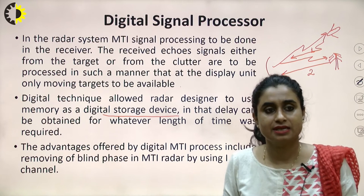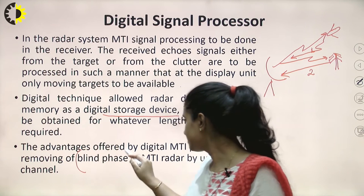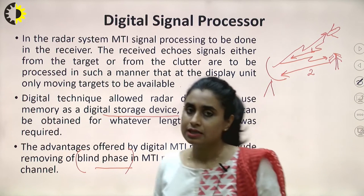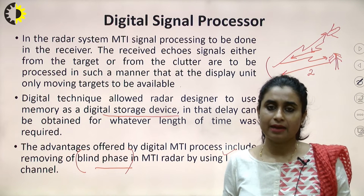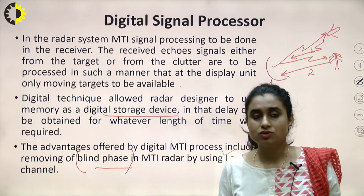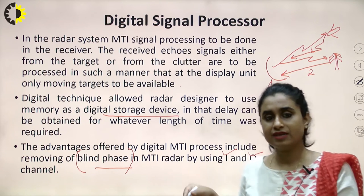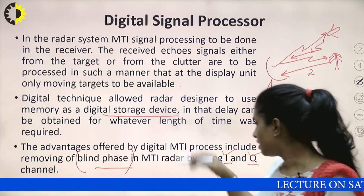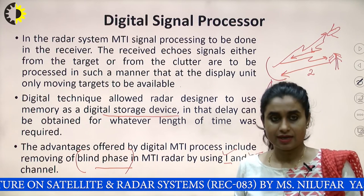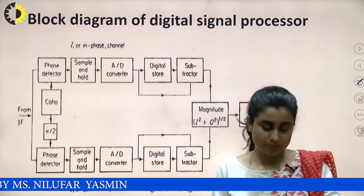We need a good digital signal processor that will analyze these two signals, process them, use some storage unit, some reference data, phase locking, comparison, and filtering. The advantages offered by the MTI processor include removal of blind speed and blind phase in MTI radar by using in-phase and quadrature channels. Blind speed is a major issue in MTI radar, and we must find ways to eliminate or reduce it using a good quality digital signal processor. The echo signal from stationary targets is essentially the noise we want to eliminate.